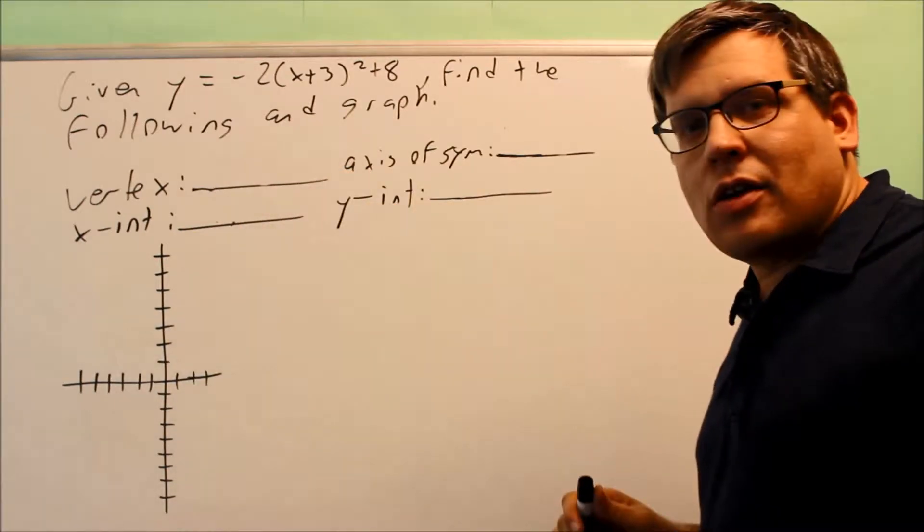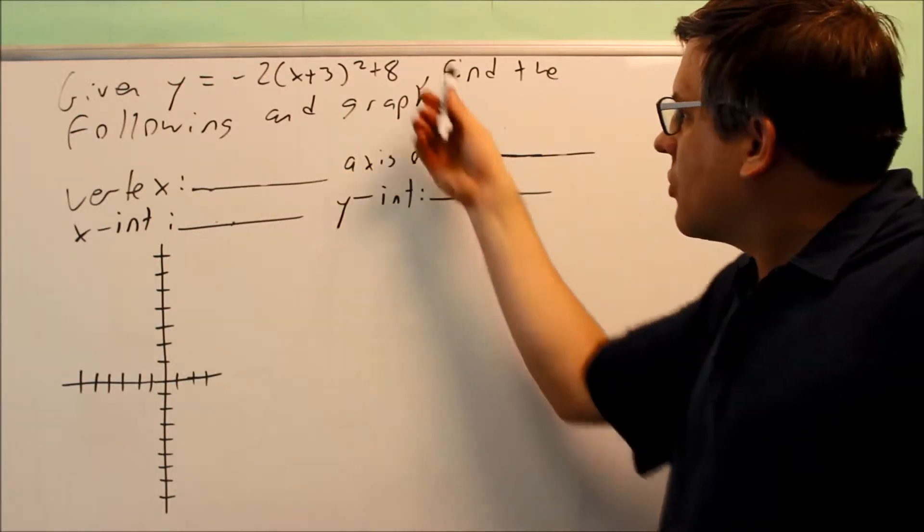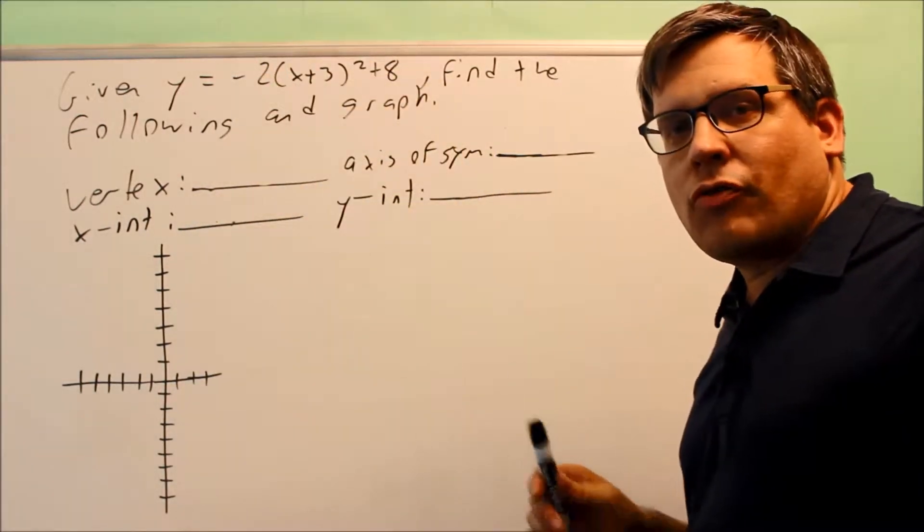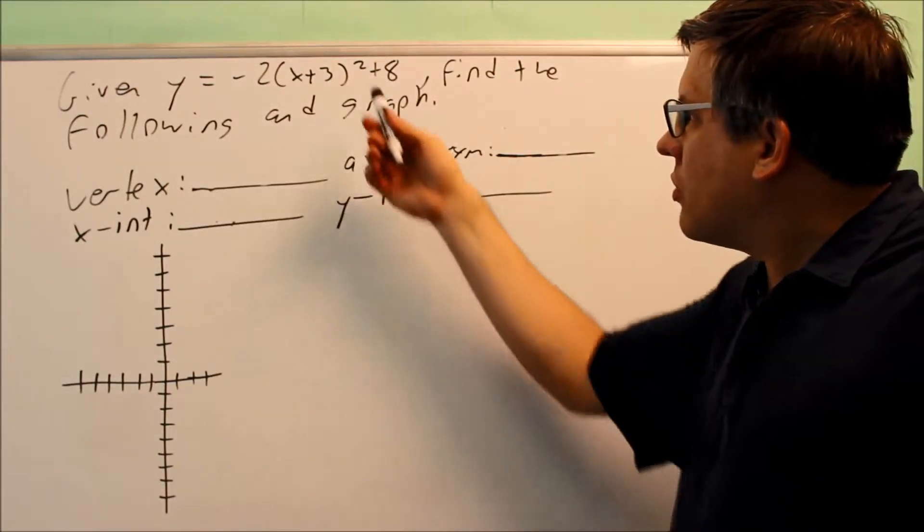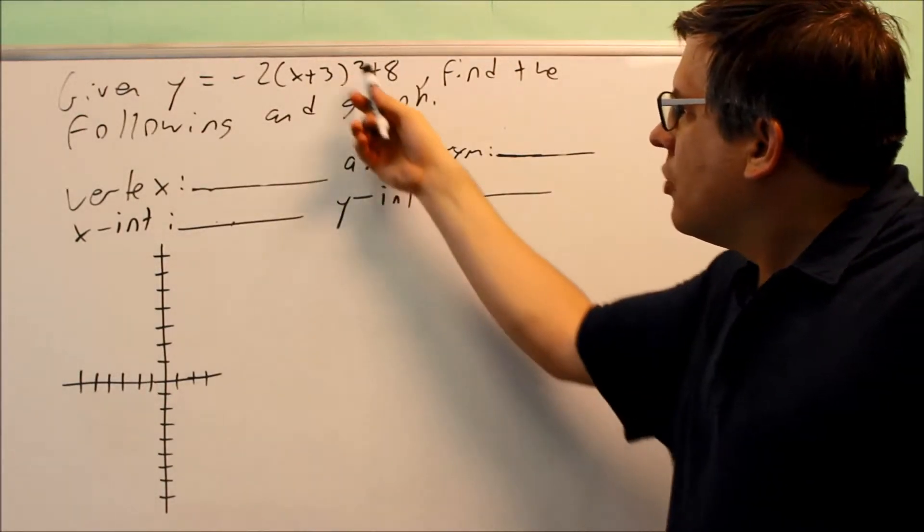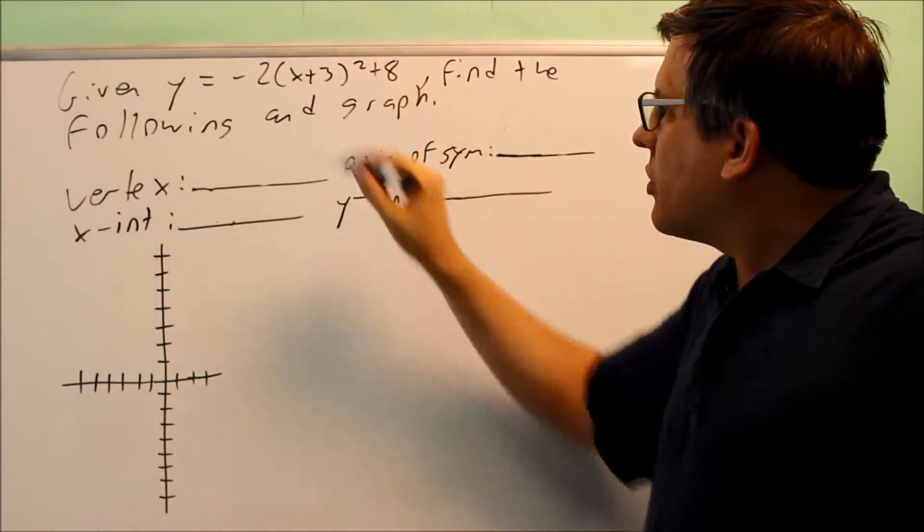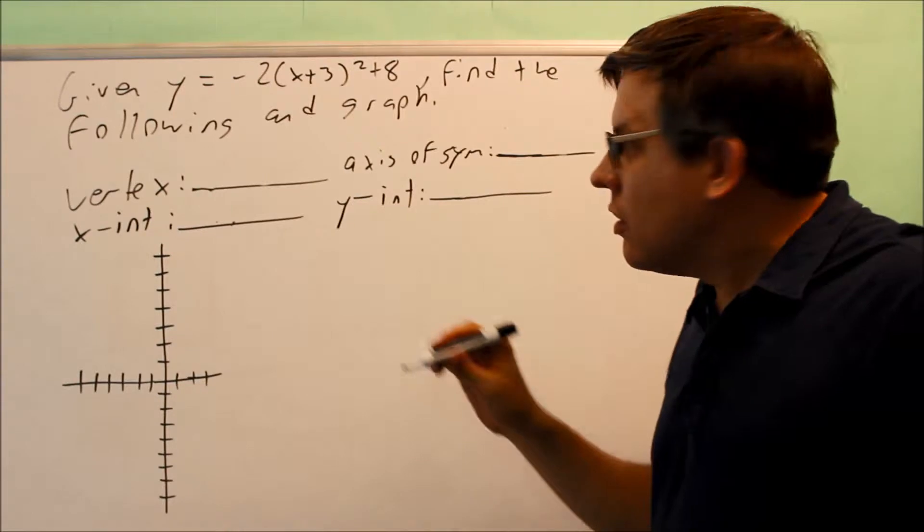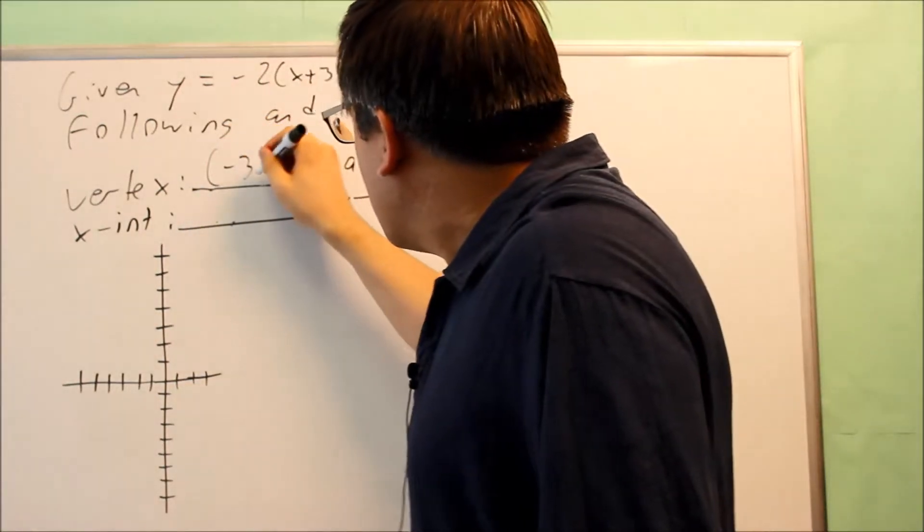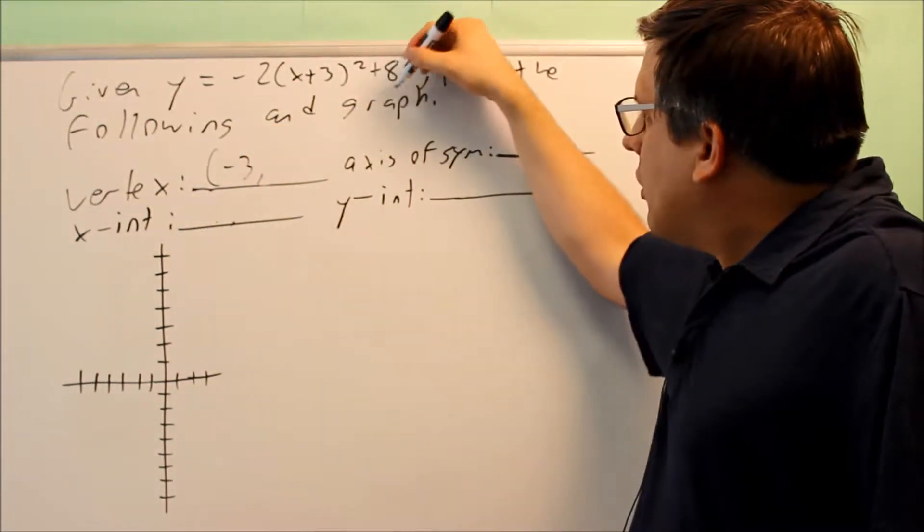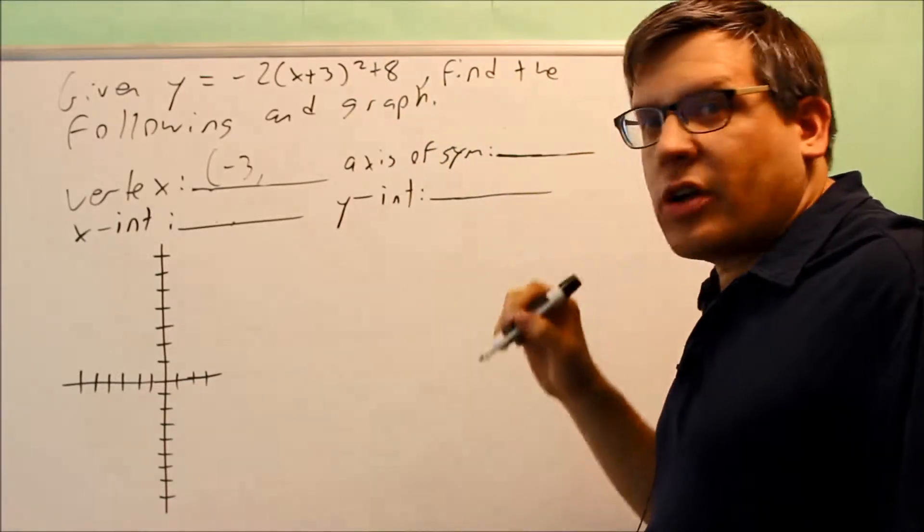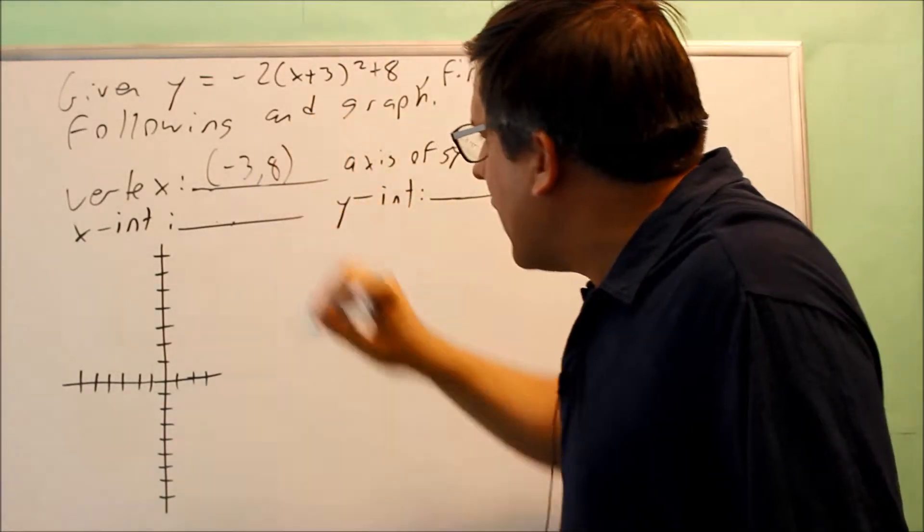Okay, so first thing we'll look at is the vertex. Now this particular equation is written in vertex form, which means that you can tell what the vertex is going to be directly from the formula itself. So what you do is you take the opposite sign of what number you see inside there, that's a plus 3, and so you're going to get negative 3 that comes out. And then the value on the end here, you're going to put exactly the same number, so we're going to put 8 there.